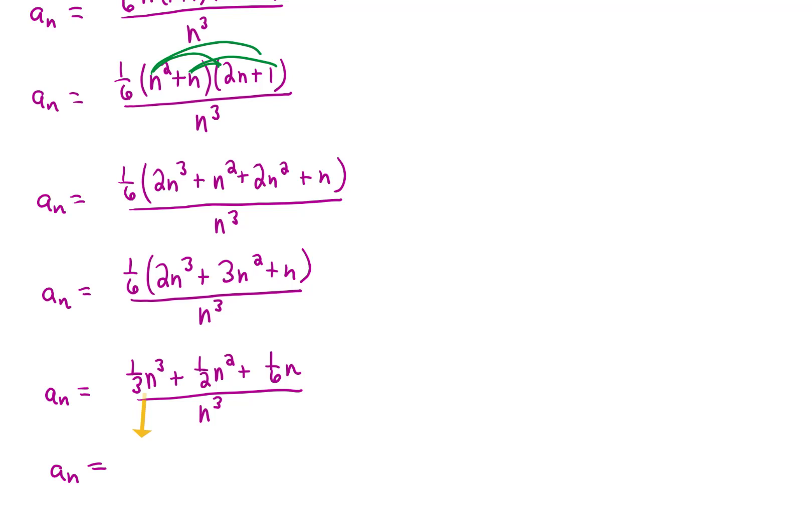Dividing this first term by n cubed gives us 1 third. Dividing the second term by n cubed gives us 1 over 2 times n. And dividing the third term by n cubed gives us 1 over 6 times n squared.